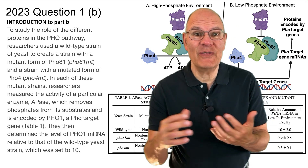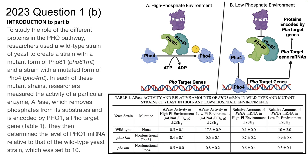Question 1b moves us into the analysis of experimental results. To study the role of the different proteins in the FOX pathway, researchers used a wild type strain of yeast to create a strain with a mutant form of FOX81 (FOX81MT) and a strain with a mutated form of FOX4 (FOX4MT). In each mutant strain, researchers measured the activity of a particular enzyme, APACE, which removes phosphates from its substrates and is encoded by FOX1, a FOX target gene, as shown in Table 1. They also determined the level of FOX1 mRNA relative to the wild type yeast strain, which was set to 10.